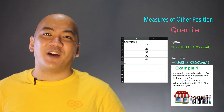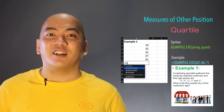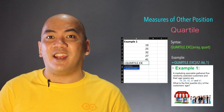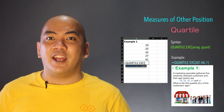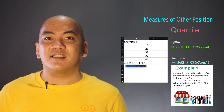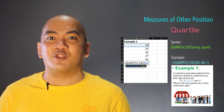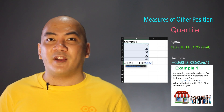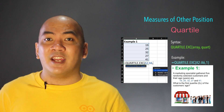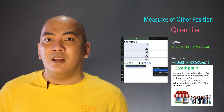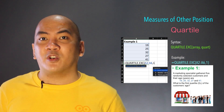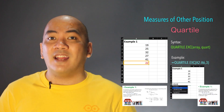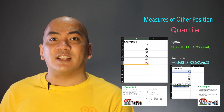For the measures of other positions, starting with quartiles, use QUARTILE.EXC. Then in parenthesis, enter the cell reference of the first observation, a colon, the cell reference of the last observation, then a comma, followed by 1 for Quartile 1, 2 for Quartile 2, and 3 for Quartile 3.